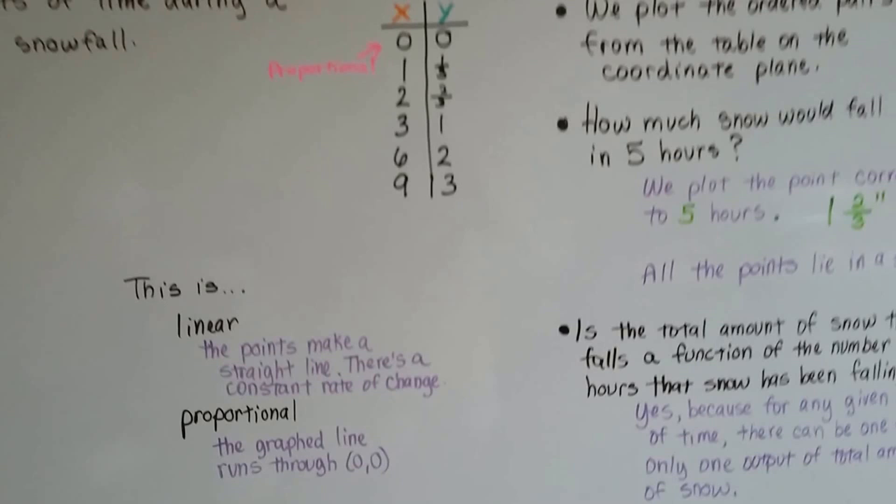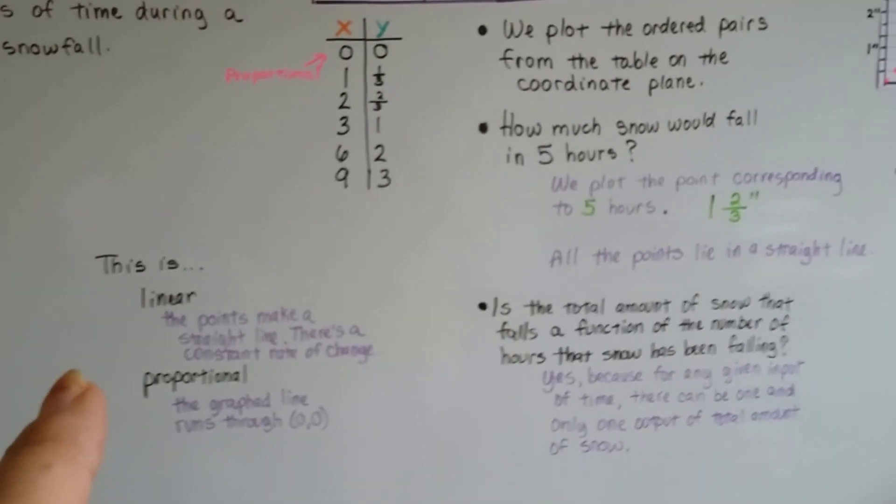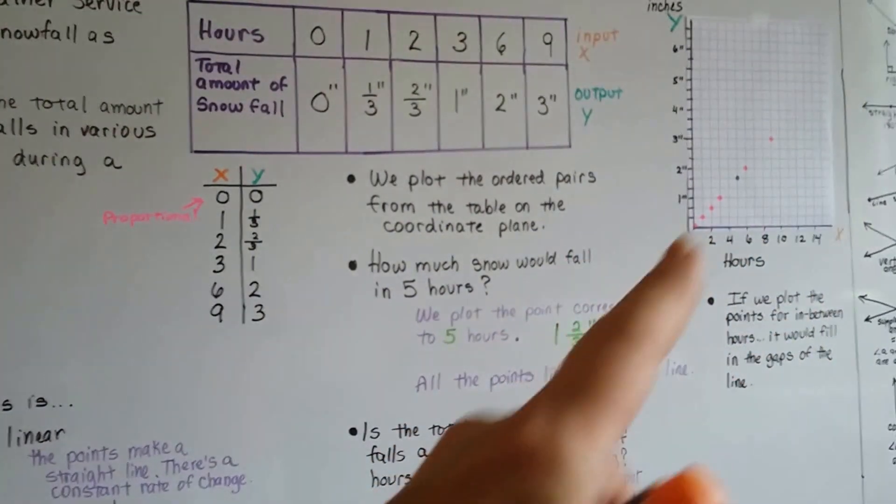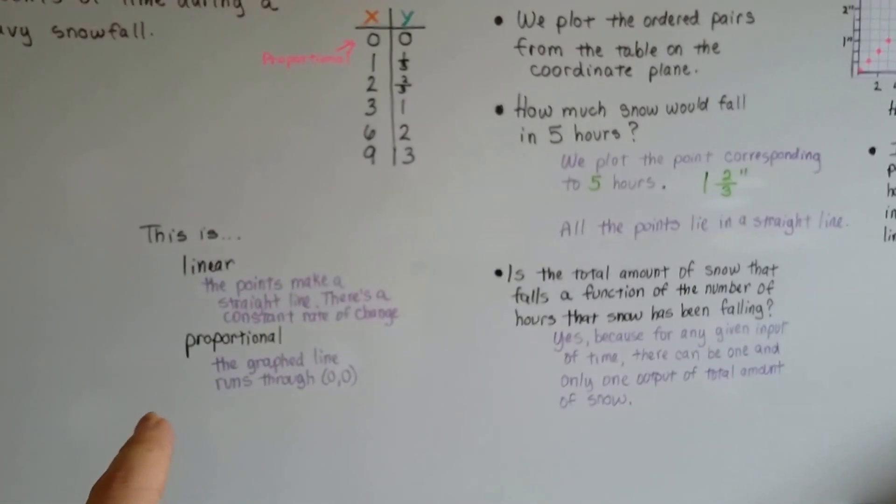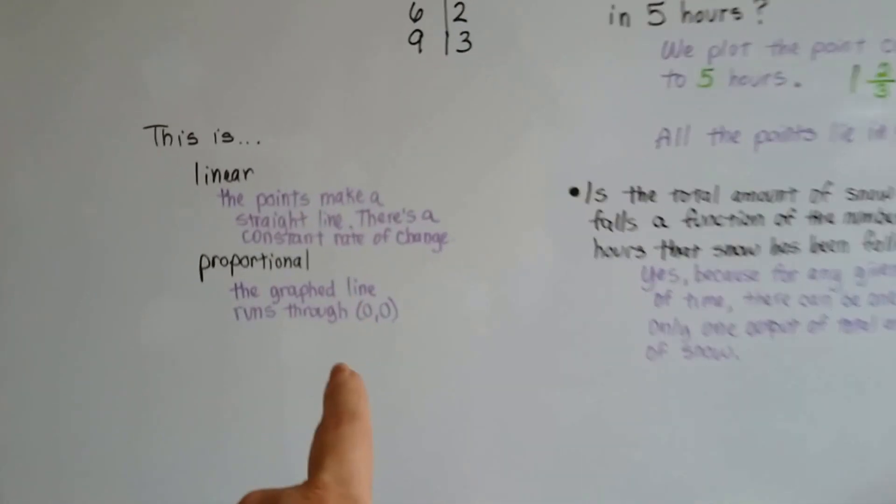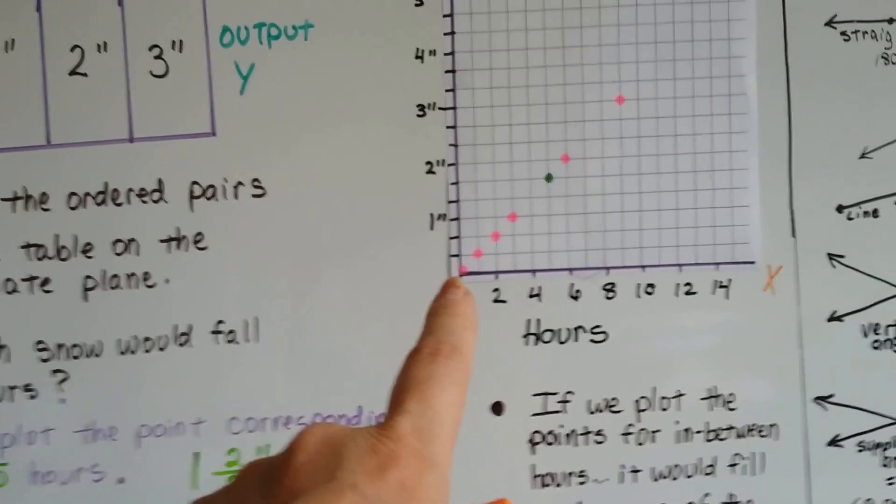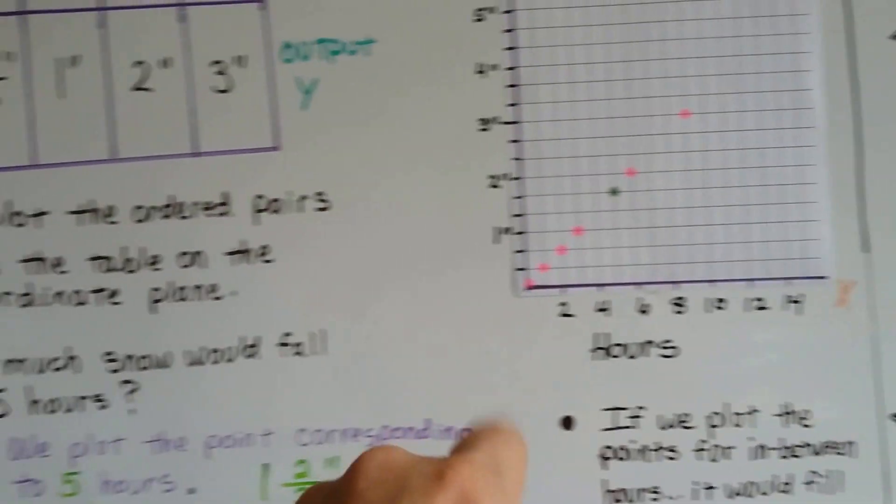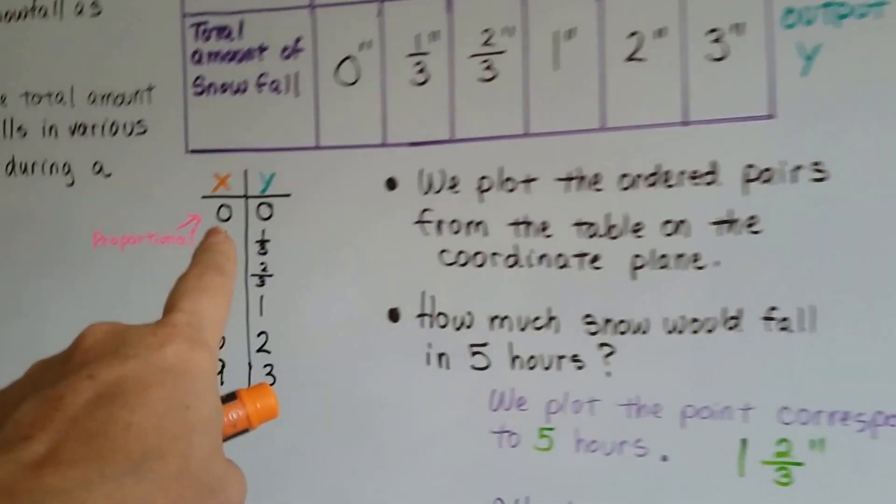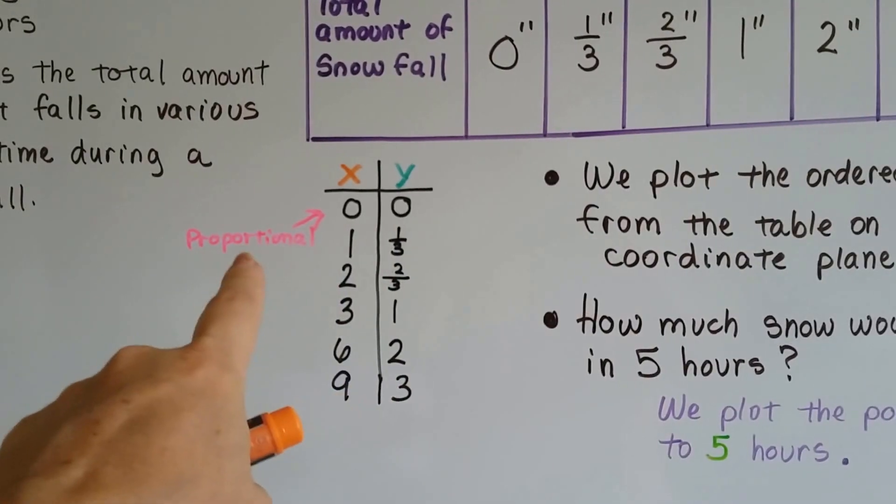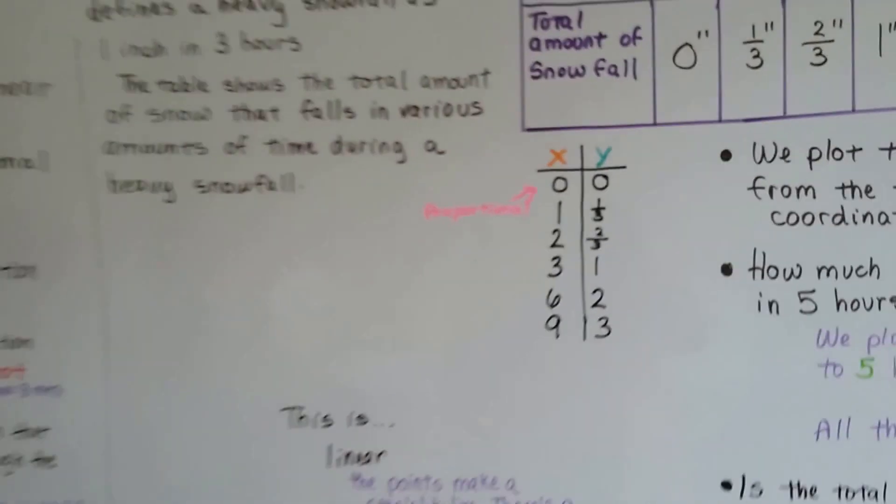This is linear because the points make a straight line and there's a constant rate of change on our graph. And it's proportional because the graphed line runs through the origin (0,0). So it's linear and proportional. It goes right through (0,0). And it even says so on the table, that it goes through (0,0), that it's proportional.